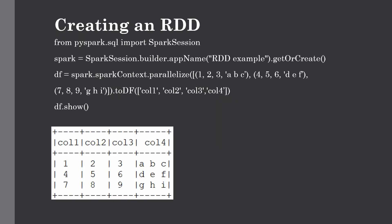If you are familiar with Python, this is very easy to understand. To get started writing Spark code, the first step is to create a Spark session, which is the entry point of every Spark application. For that, you need to import SparkSession from spark.sql. On the next line, we create a Spark session using the builder method, passing parameters such as app name — here 'RDD Example' — and getOrCreate, which tells Spark to either get an already created session or create a new one. These two lines will be the entry point of your every Spark code.